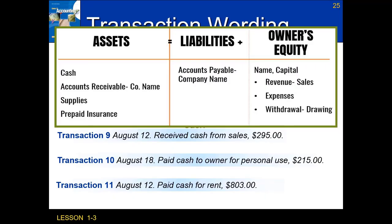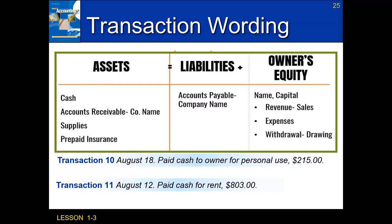Transaction nine on August 12th: received cash from sales. My first keyword is 'cash' — receiving cash is a positive. My second keyword is 'sales' — sales revenue is always a positive. Positive on the left, positive on the right. Transaction ten on August 18th: paid cash to owner for personal use. My first keyword is 'cash,' which decreases. My second keyword is 'owner' with buddy 'personal,' matching the withdrawal drawing account. Paying cash is a negative, and withdrawals are always a negative.